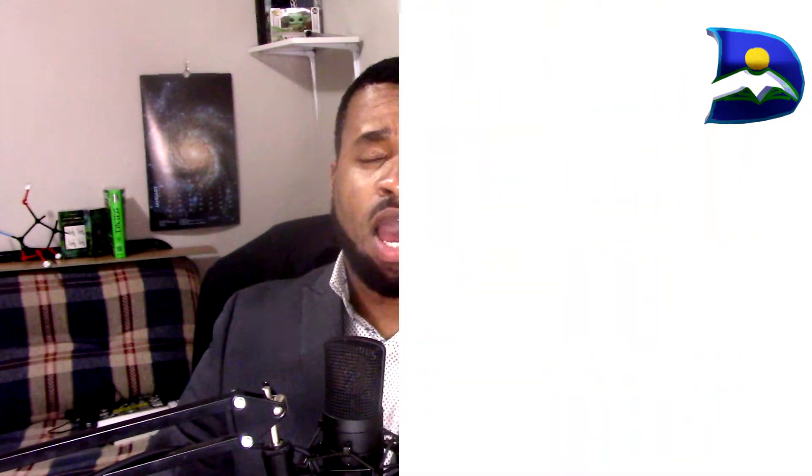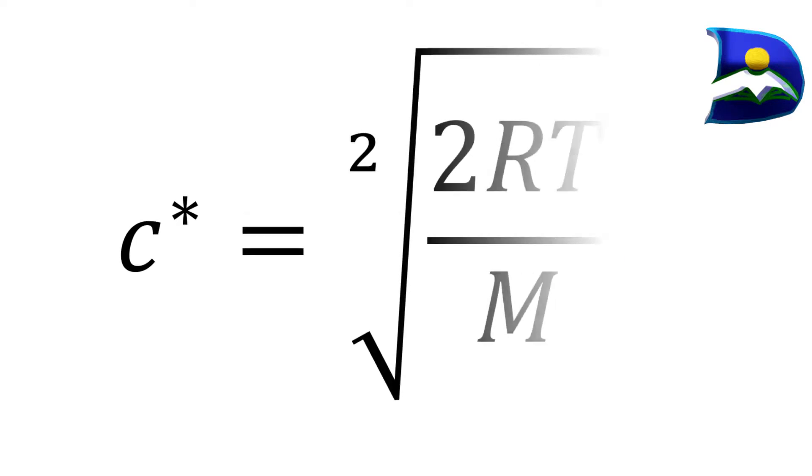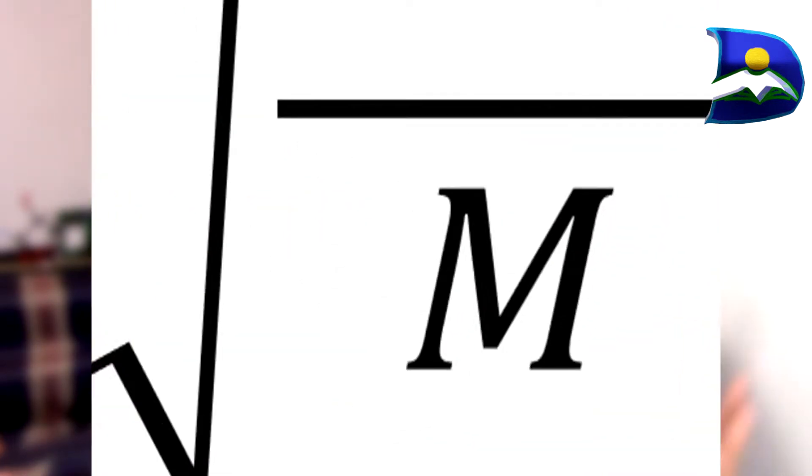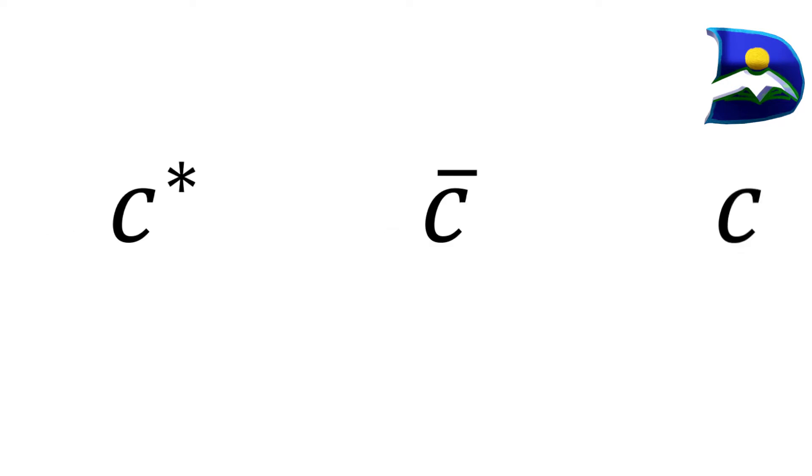We're talking about this workload formula and how this formula is going to be used to actually solve a specific problem. First, we're going to be able to derive this formula, which will enable us to determine a specific variable — the key variable here is c-star. You're wondering what are all these variables: c-star, R, T, and M. In this case, c-star is actually different from c-bar and c.